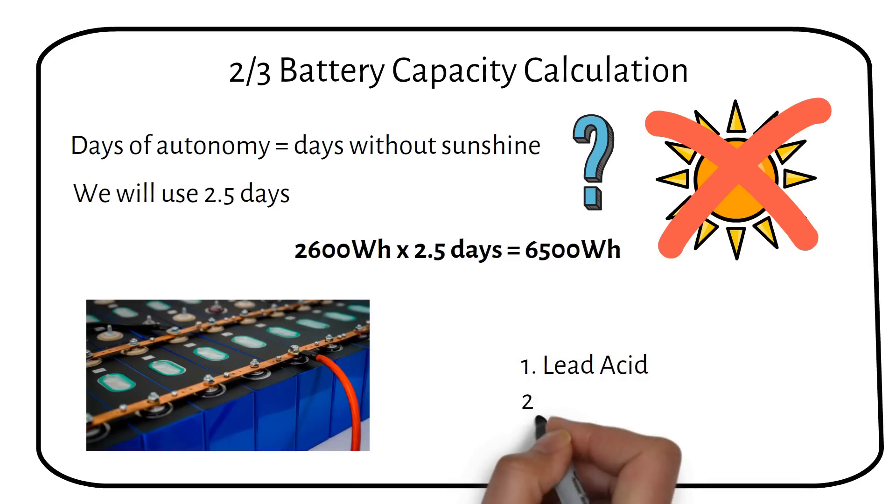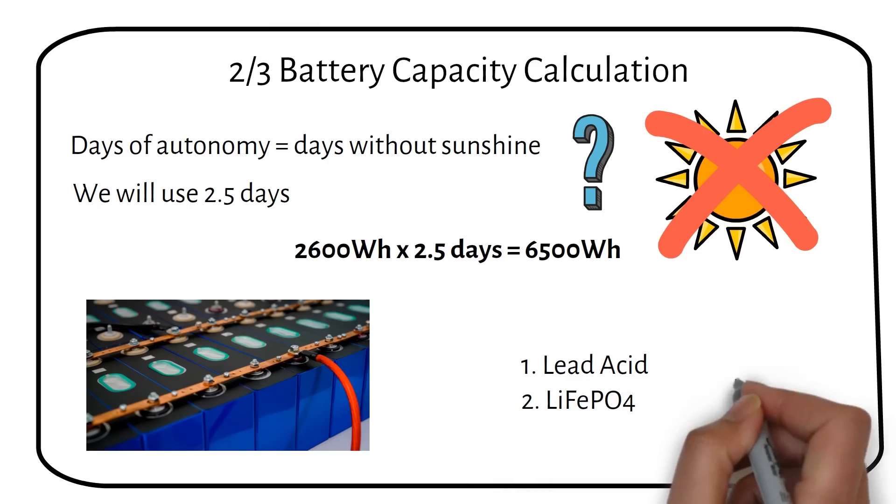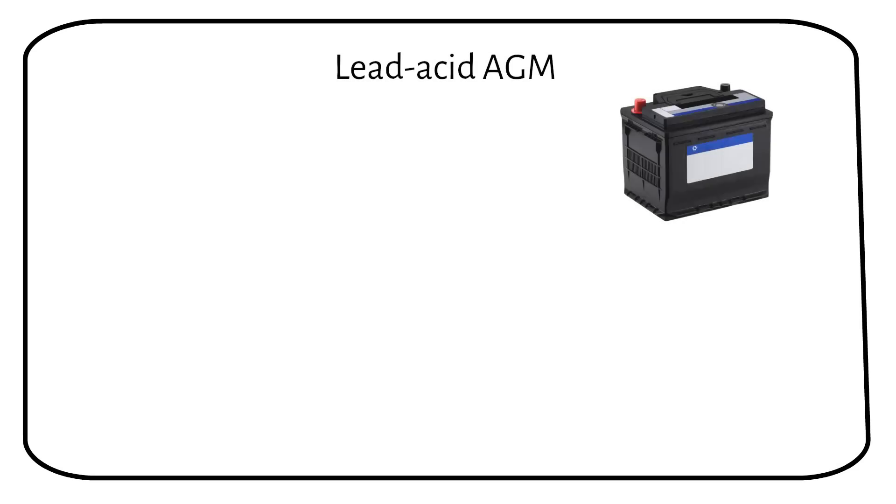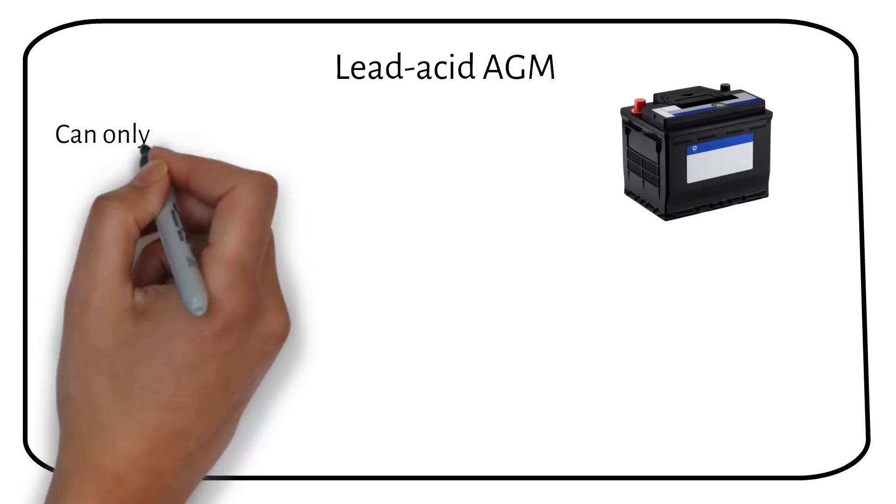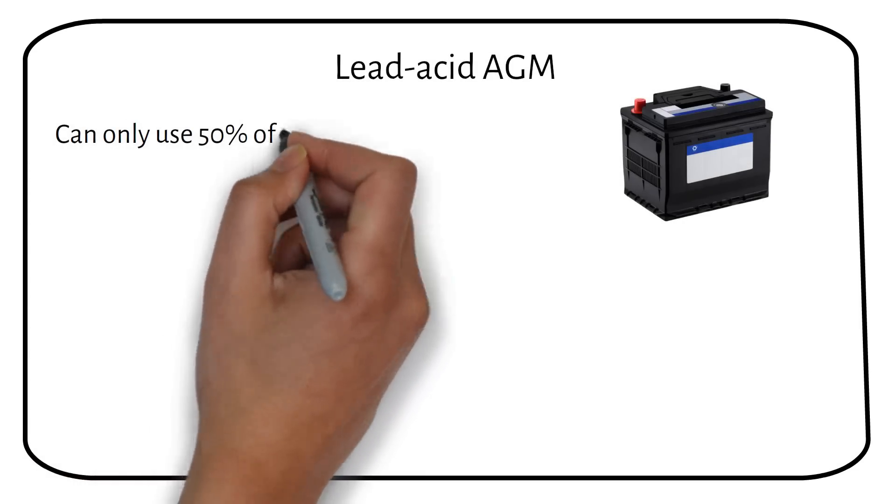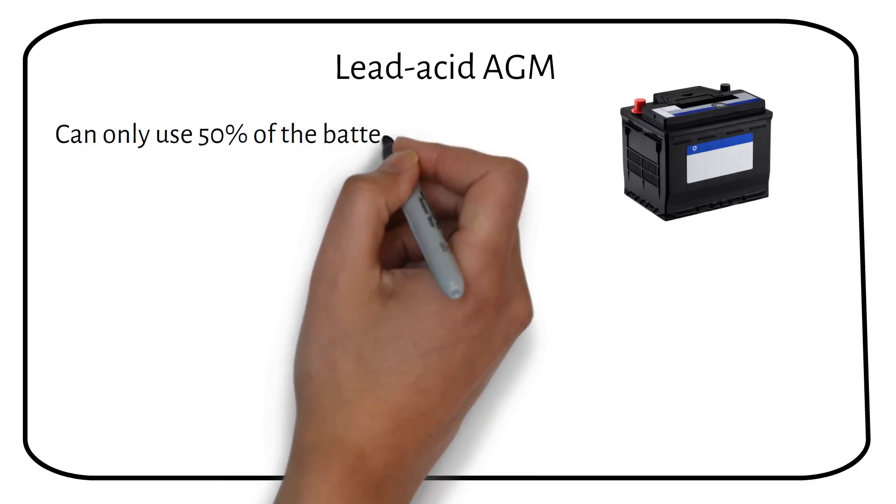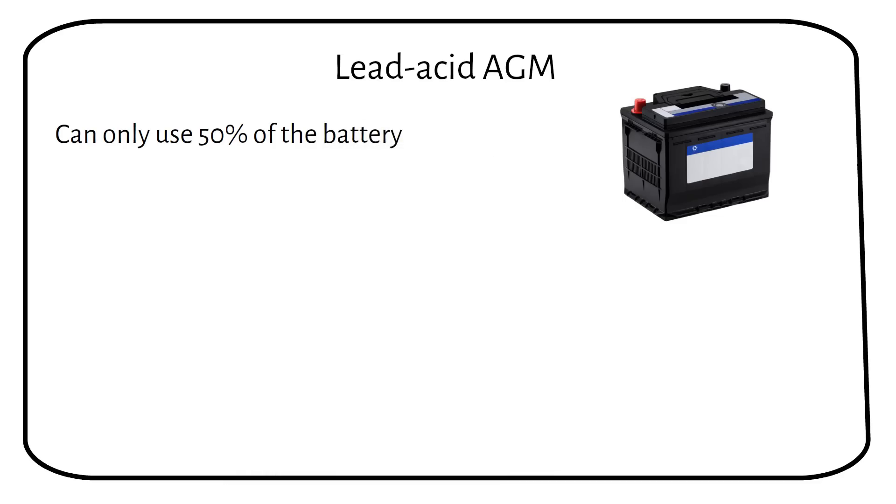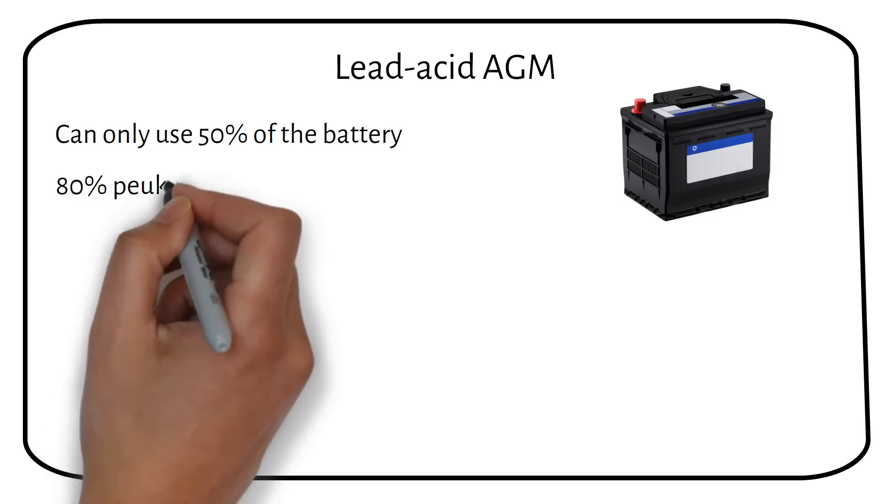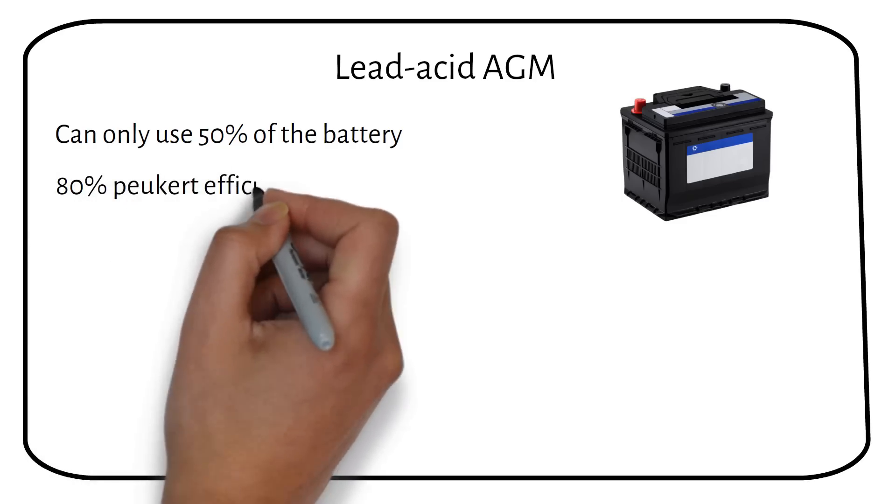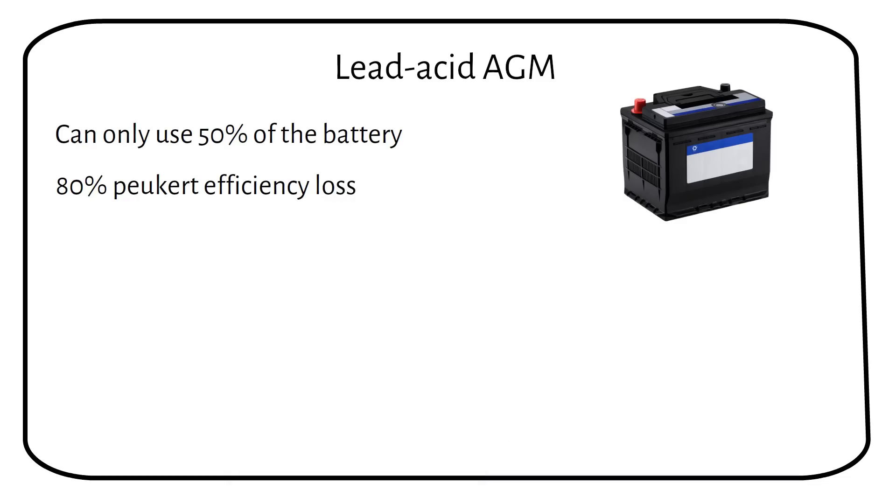Now I'll make a calculation for lead-acid batteries and lithium batteries. Because both will be different. If we use a lead-acid battery, we can only use 50% of the capacity. So we must double the capacity. The first half will stay in the battery. The other half will be charged and discharged. So it's subject to the Peukert effect, which is the losses through heat generation at different currents when charging and discharging a battery.